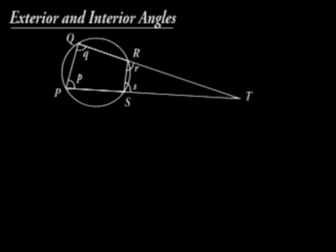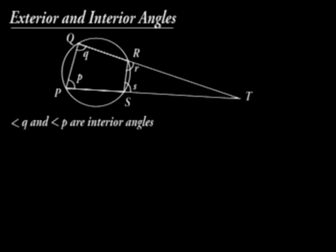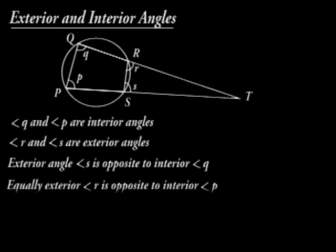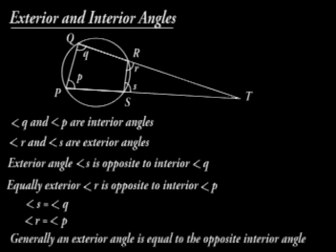Exterior and interior angles. Angles Q and P are interior angles. Angles R and S are exterior angles. Angle S is opposite to interior angle Q. Equally, exterior angle R is opposite to interior angle P. Angle S is equal to angle Q, and angle R is equal to angle P. Generally, an exterior angle is equal to the opposite interior angle.